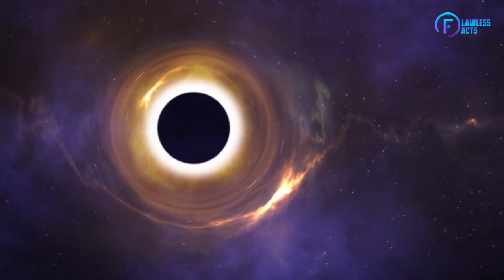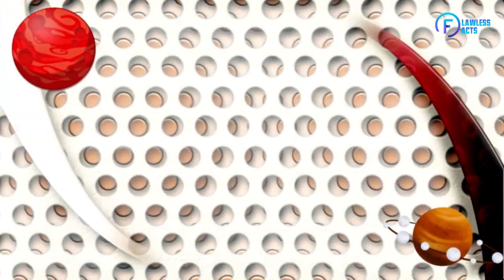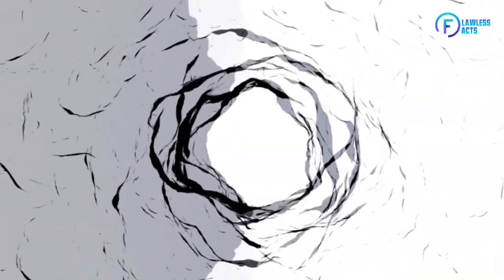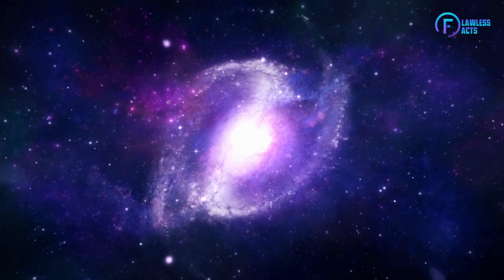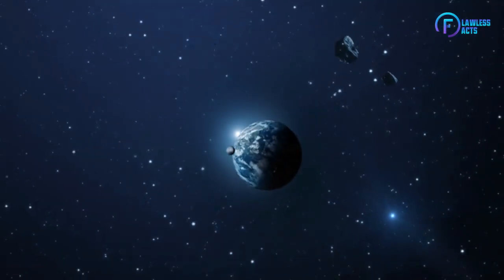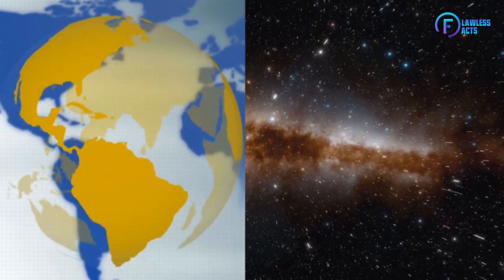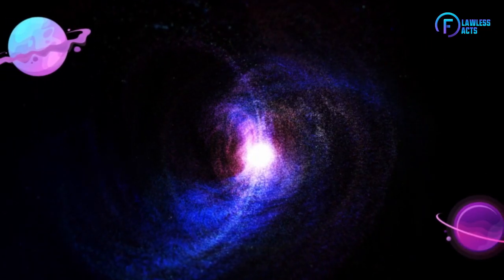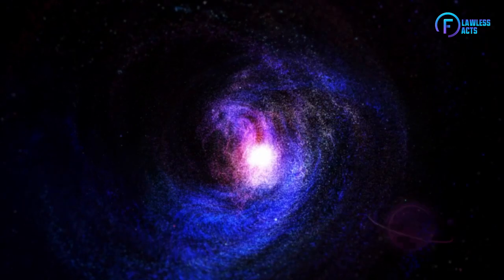Mostly we would have heard about black holes a lot but have you ever heard about white holes? A white hole is a theoretical object in the universe that is the opposite of a black hole. While a black hole is a region of space where gravity is so strong that nothing, not even light, can escape, a white hole is a region where matter and energy can only leave and cannot enter.